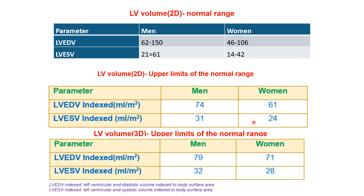The LV end-systolic volume index upper limit is 31 mL/m² in males and 24 mL/m² in females. For 3D echo, the LV end-diastolic volume index upper limit is 79 mL/m² in males and 71 mL/m² in females, and the LV end-systolic volume index is 32 mL/m² in males and 28 mL/m² in females.